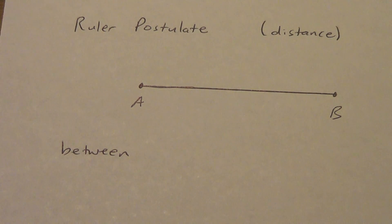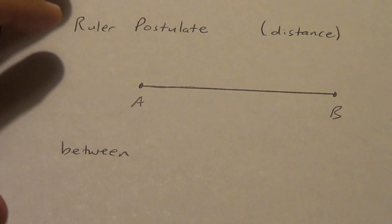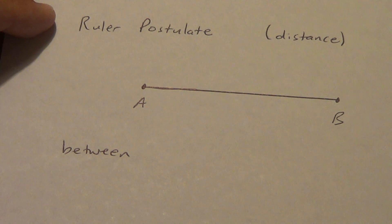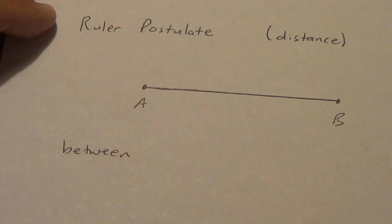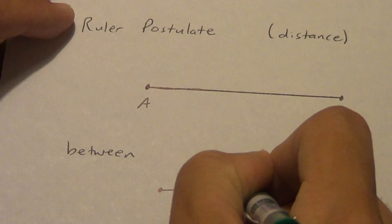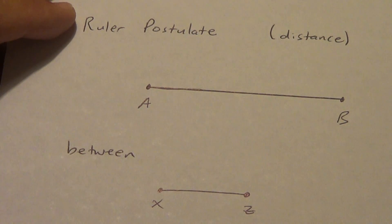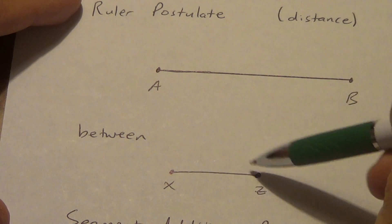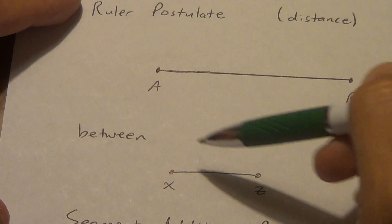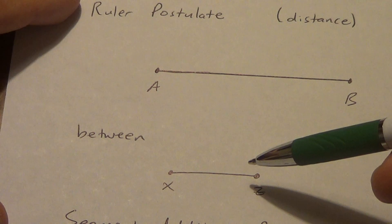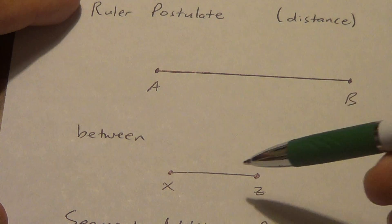If I say that point Y is between X and Z, the word 'between' implies something. Imply means it says something without really saying it outright. So if Y is between X and Z, Y cannot just be off to the side somewhere — between implies that the points are collinear.